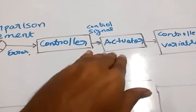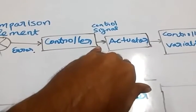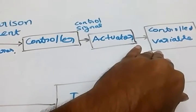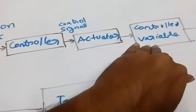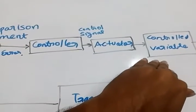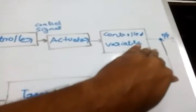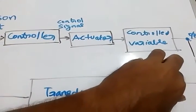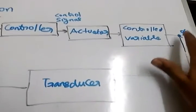Suppose if we imagine that this actuator is connected to the arm of the robot. Then this controlled variable is nothing but the arm itself. So this is the motor in the arm unit. This is nothing but the motor itself. This controlled variable is nothing but the position of the arm. So a sensor is kept in the arm which measures the position of the unit.